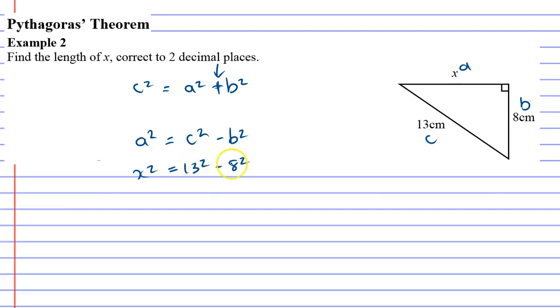So essentially we've done the same thing. We've got the numbers here, except instead of adding them, we're subtracting them. Making sure that your hypotenuse or your larger number is on the left-hand side.